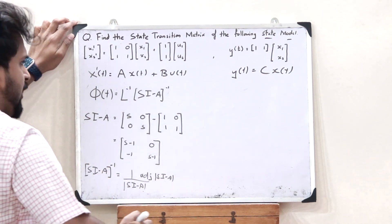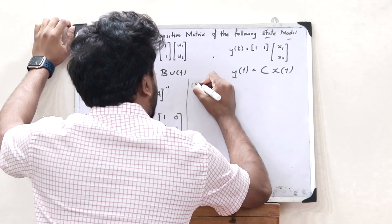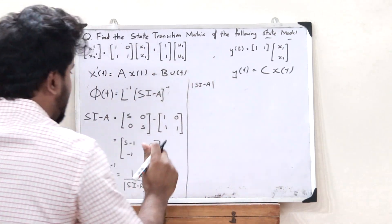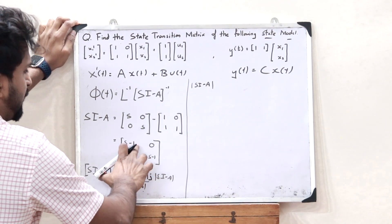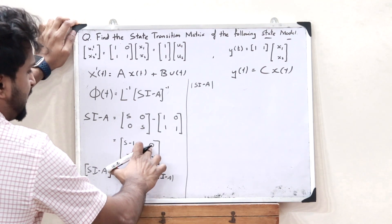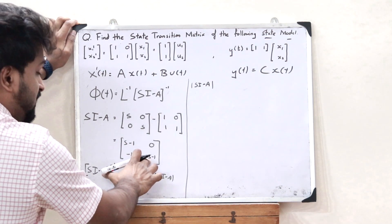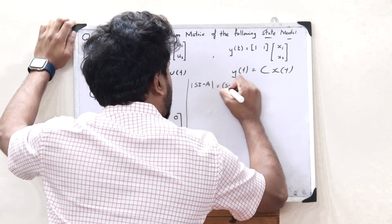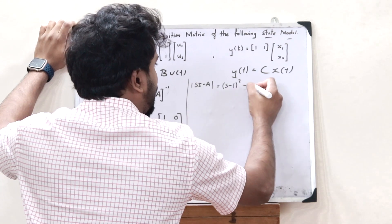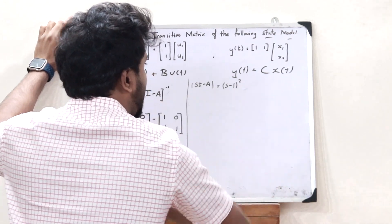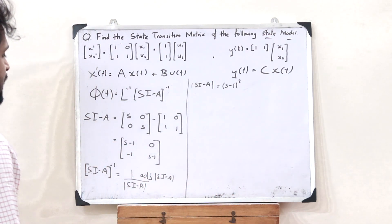Let us find these particular values. The determinant of sI - A is (s-1)(s-1) minus the cross multiplication, which is (s-1)^2. Then (s-1)^2 minus 0·(-1) = (s-1)^2 minus 0, which is simply (s-1)^2.